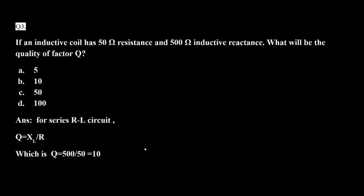Question 3: if an inductive coil has 50 ohm resistance and 500 ohm inductive reactance, what will be the quality factor Q? Options are 5, 10, 50, and 100. For an RL series circuit, Q equals inductive reactance divided by resistance. So Q = 500 divided by 50, which equals 10. The answer is option B.